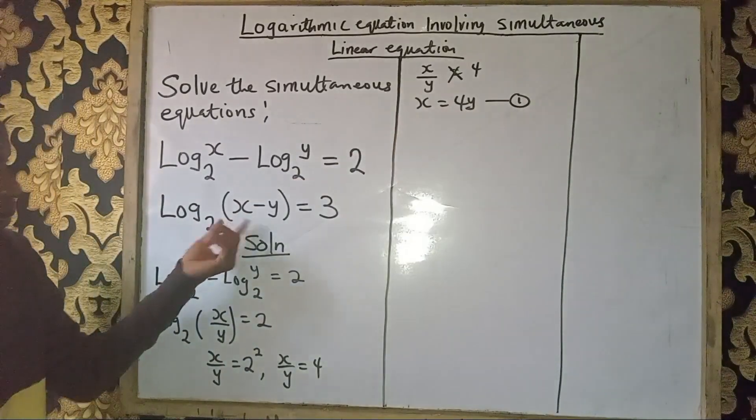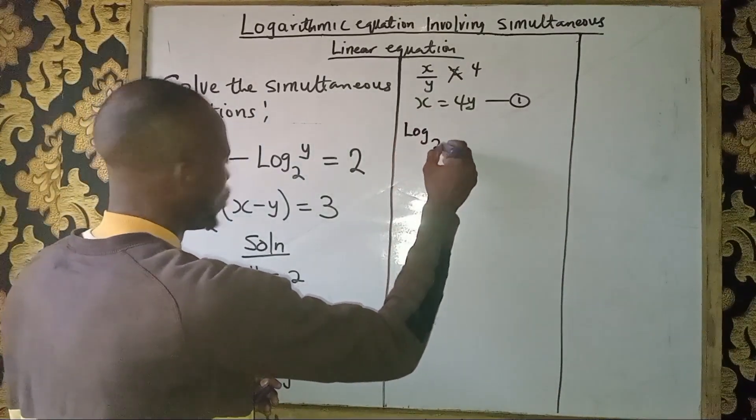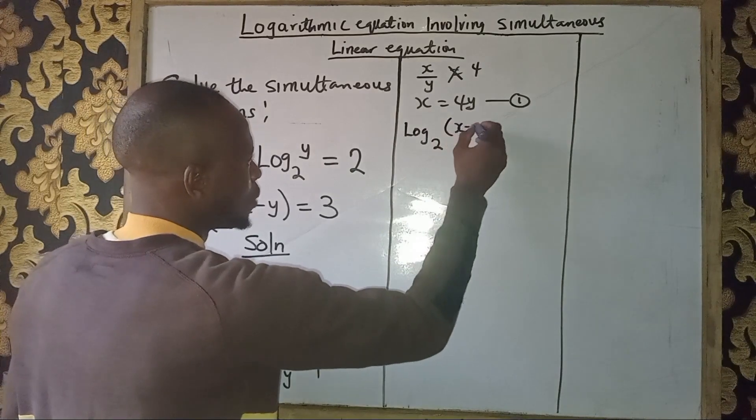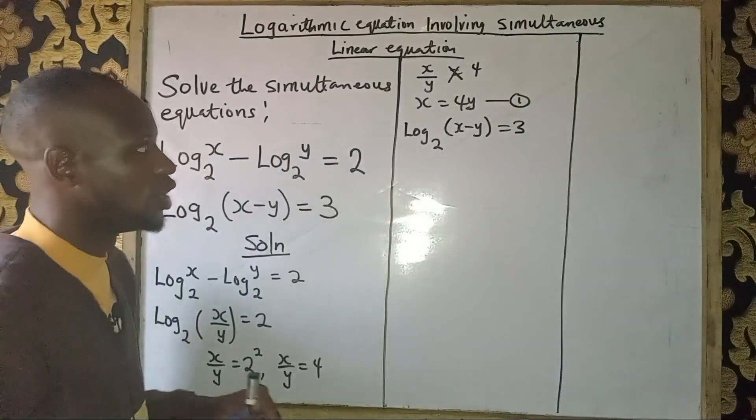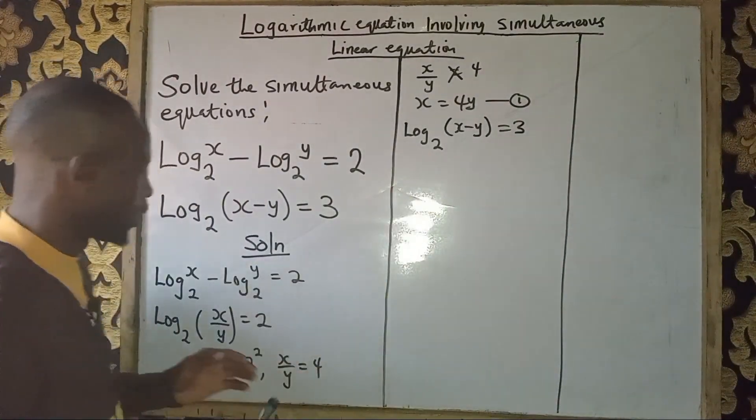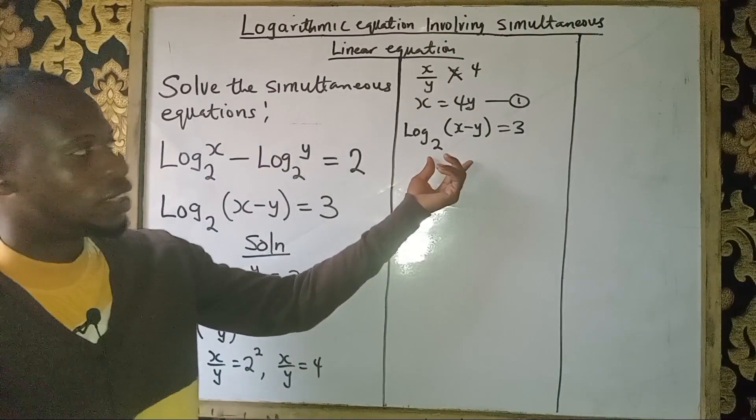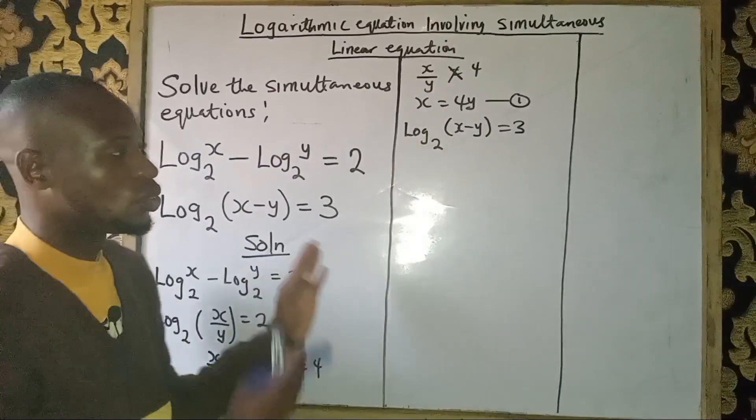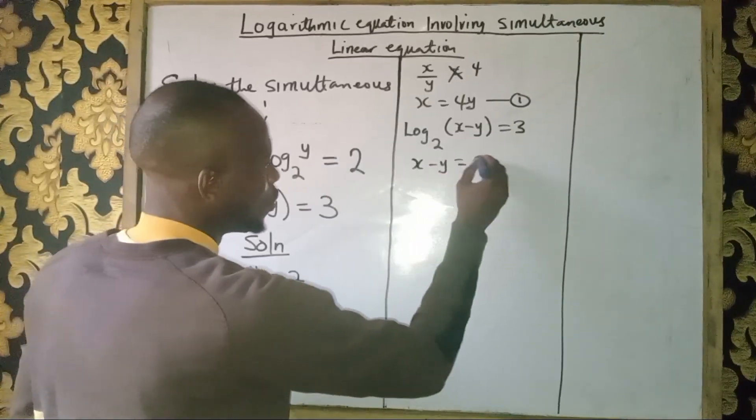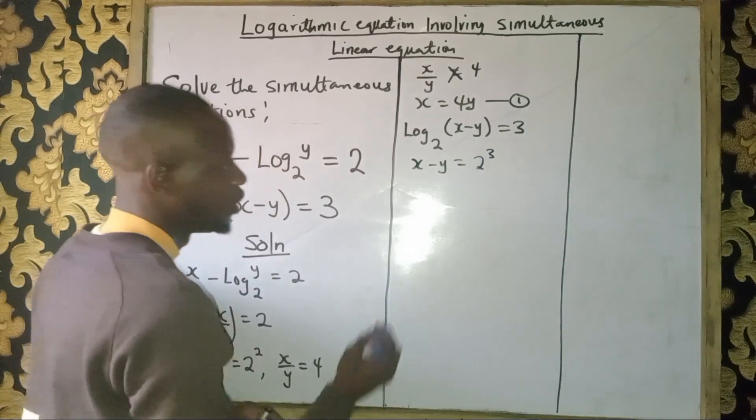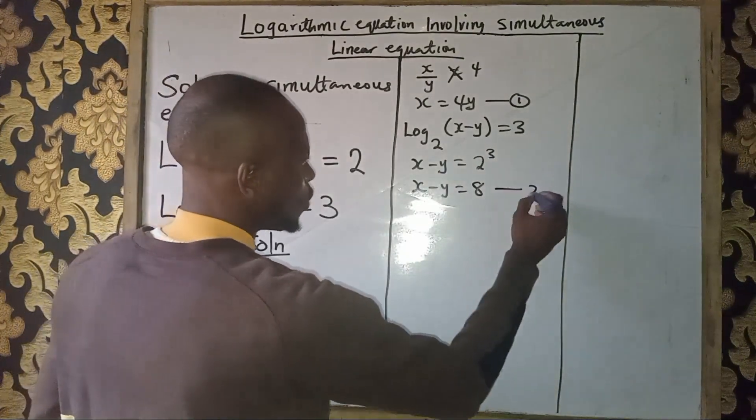Similarly, we do the same thing here. We have log base 2 of (x-y) equals 3. This one is already together, so you just take the log of both sides to base 2. You will have x-y equals 2 raised to power 3, and that gives us x-y equals 8. This is equation 2.